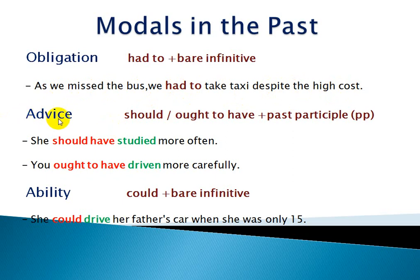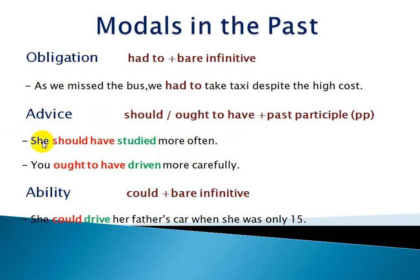Advice can be expressed in the past by using 'should' or 'ought to have' plus past participle — for example: should have done, should have seen, should have gone. Example: 'She should have studied more often.' Did she study more often? No, she didn't. It was advisable for her to study more, but she didn't, and now she didn't get a good mark.